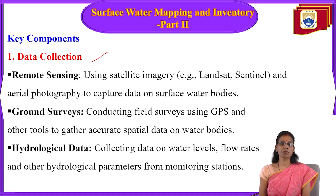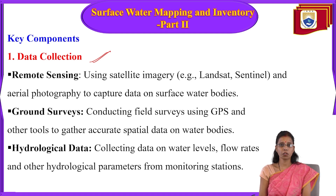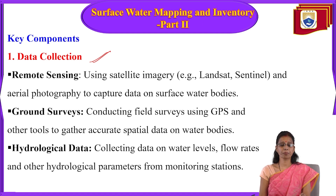For data collection, we have been discussing data acquisition in previous lectures — how data is acquired through remote sensing and other processes like scanning. The first source of data is remote sensing, which allows us to receive data without physical contact with the field. Through satellites, we receive updated information that can be used for operational purposes and for capturing data on surface water bodies.